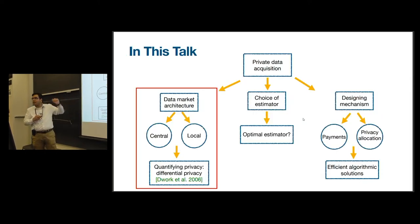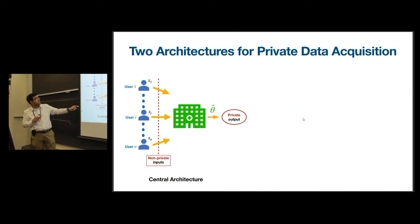Let me start with the first part, the architecture. The first architecture, the central, is the following: users share their non-private and raw data with the platform, but they ask the platform to make the final estimate theta hat private before releasing it to the public. In other words, in this setting, users have a trust on platform but they do not trust the public.